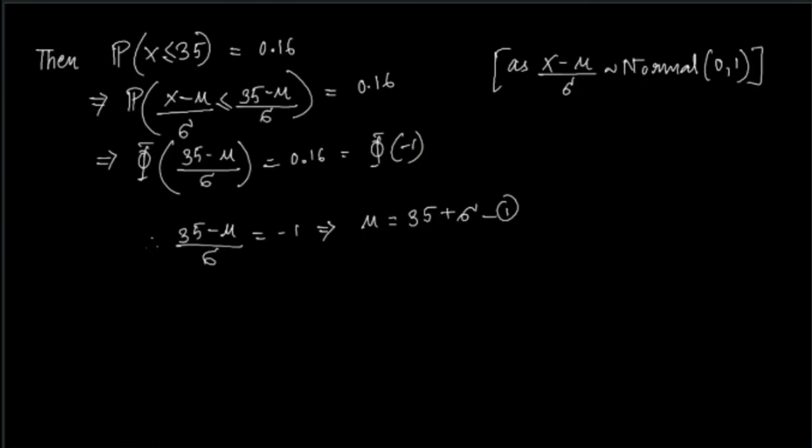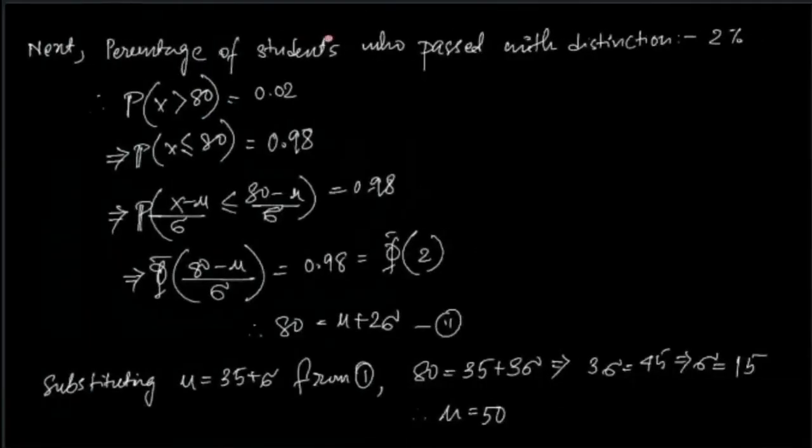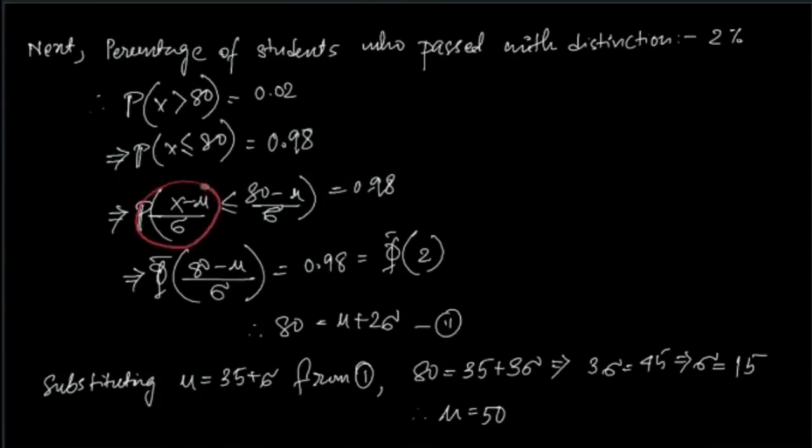Where do we get this second equation from? Remember, we have another statement where you need to get more than 80% of marks to pass with distinction. Remember, 2% of students passed with distinction, so let's use that. Probability of X > 80 is 0.02. Take its complement: probability of X ≤ 80 is 0.98.